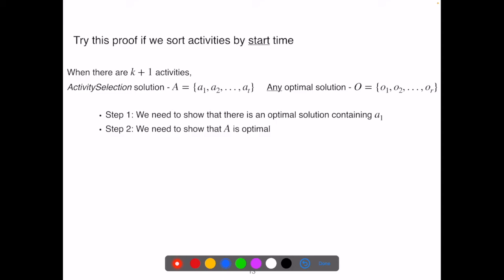Now let's see what happens if we came up with the incorrect greedy algorithm and tried to prove its correctness. Say we sort activities by their start time and come up with the greedy algorithm. Again, we use proof by induction. The basis and inductive hypothesis will be the same as what we have before. Now let's see the first step. We need to show that our greedy algorithm's first choice, a1, is a safe choice. A1 has the earliest start time. However, we won't be able to tell if a1 and o2 are compatible. We only know a1 starts earlier than o1, but we don't know for sure if a1 finishes earlier than o2 starts.